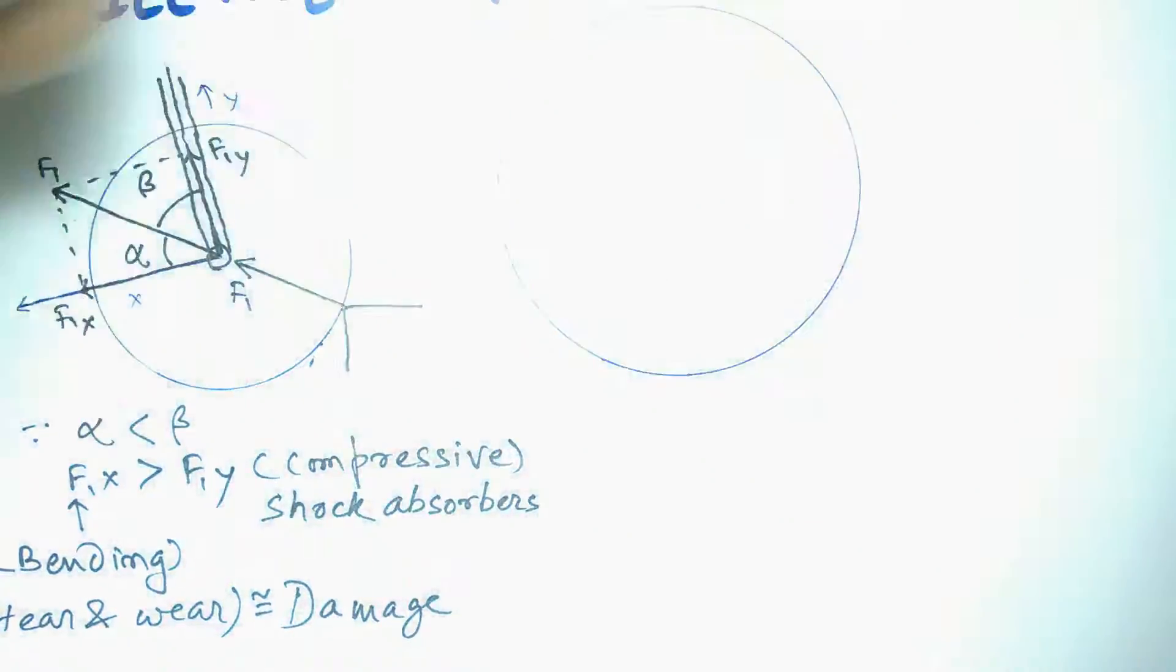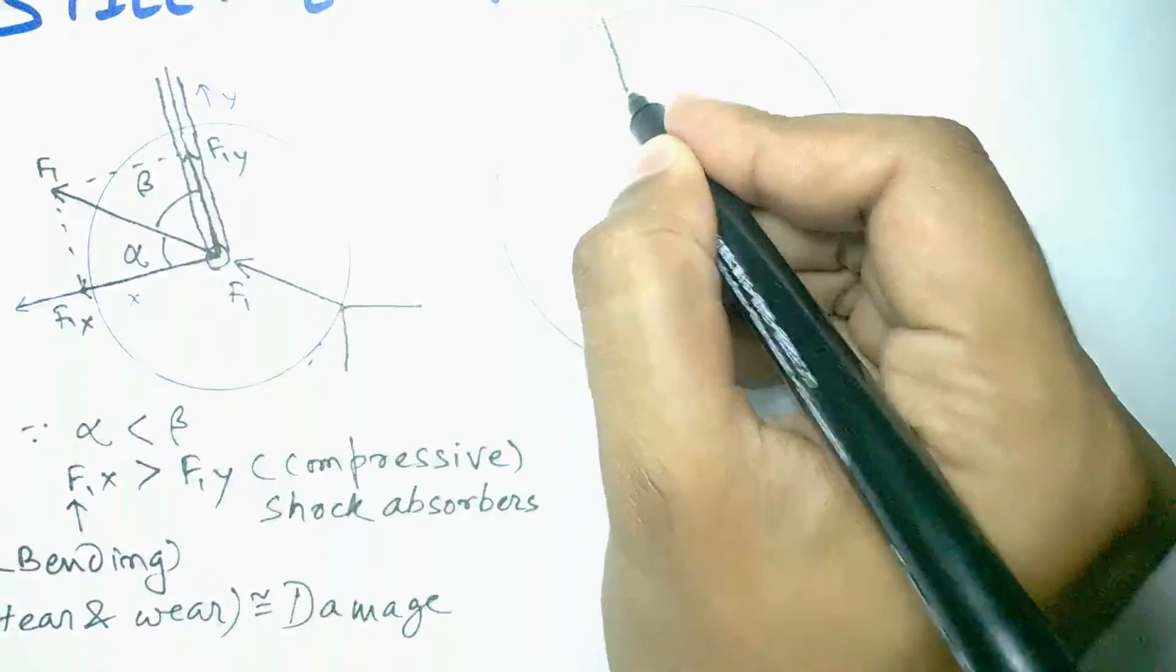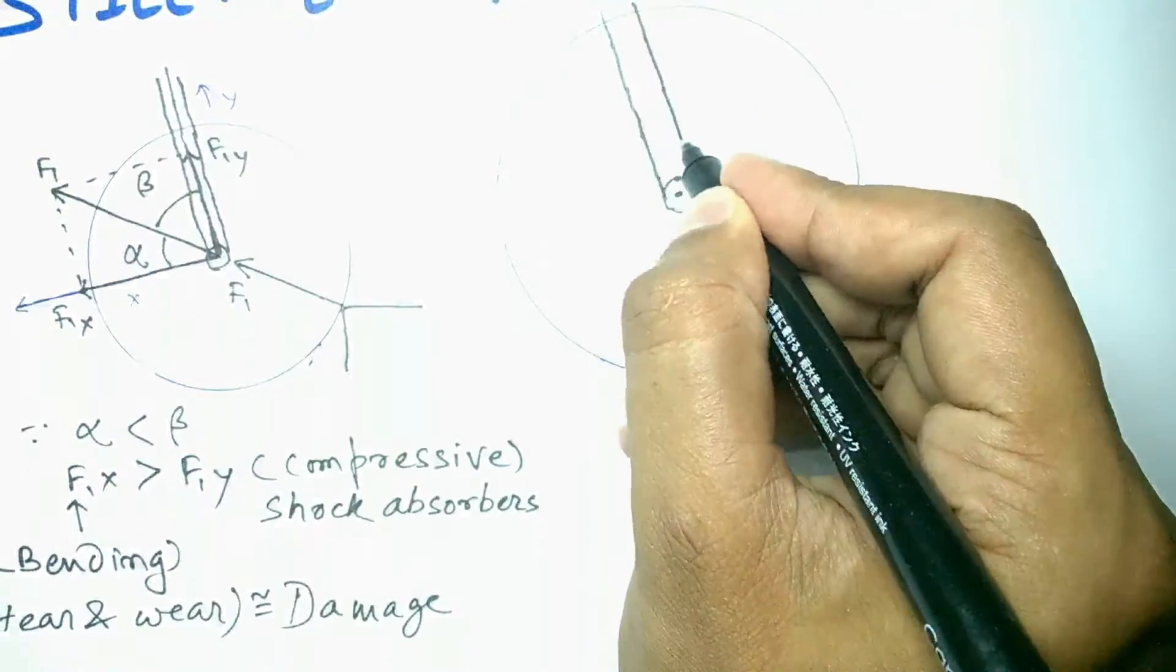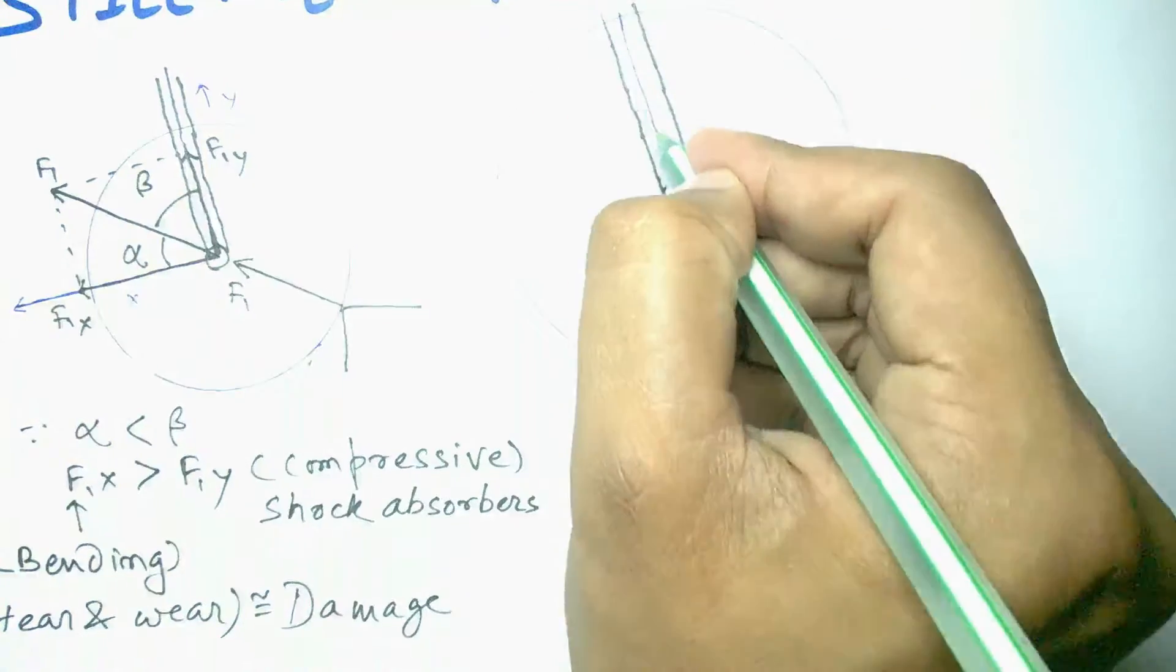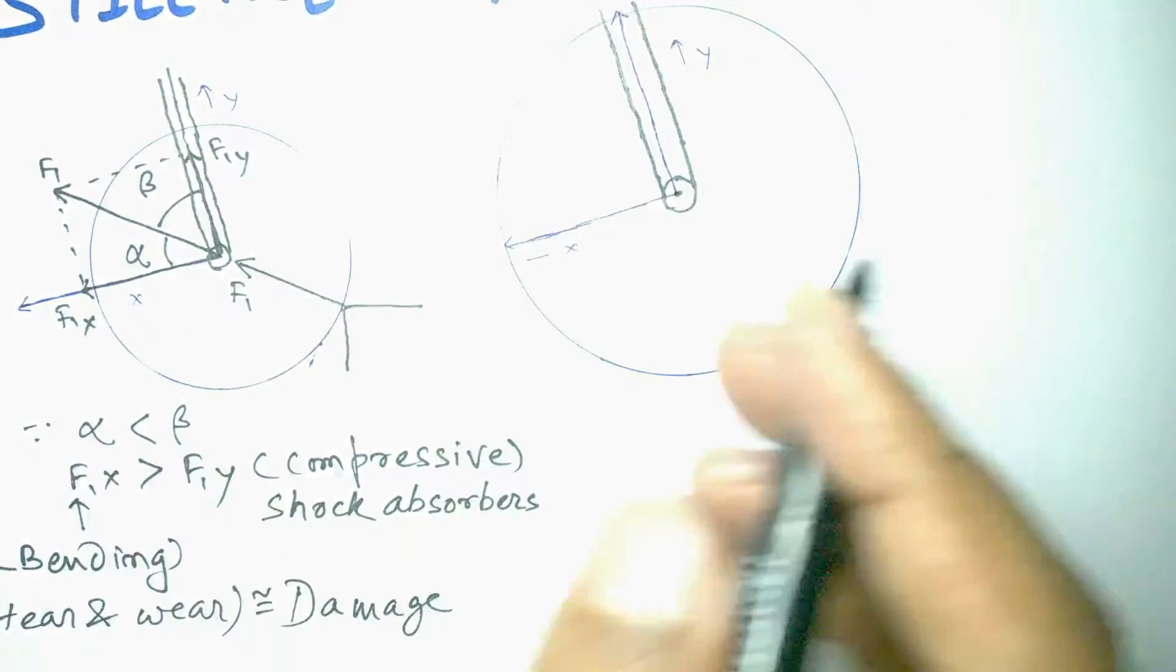Now let us consider the case of the bigger wheel with the center of mass at its center from where the handlebar is connected, taking the axis of the handlebar as y and the axis perpendicular to it as x.